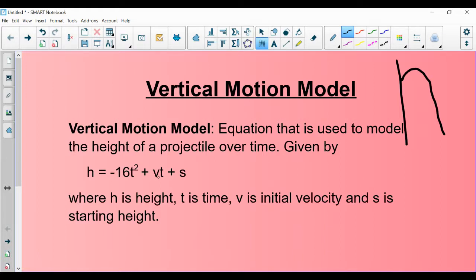V is your initial velocity. So obviously, if you're talking about throwing a ball, the harder that you throw this object, the longer it's going to be in the air. And then S is going to be the starting height.